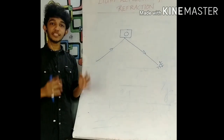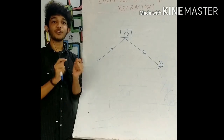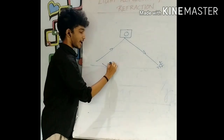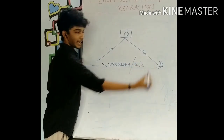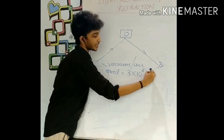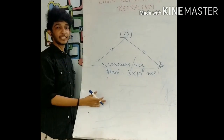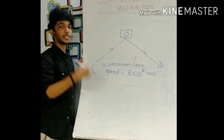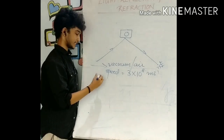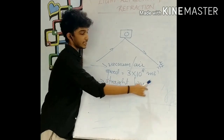Now let us learn some important points regarding light. Light, as we all know, has its maximum speed in vacuum or air. The speed of light in vacuum or air is equal to 3 × 10⁸ meters per second. Next, let us see how the propagation of light takes place. Light always travels in straight lines — that is another important point about light.